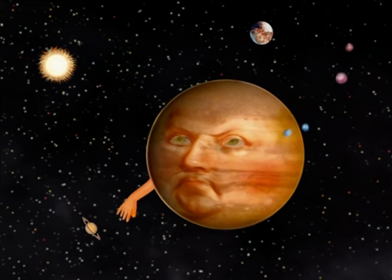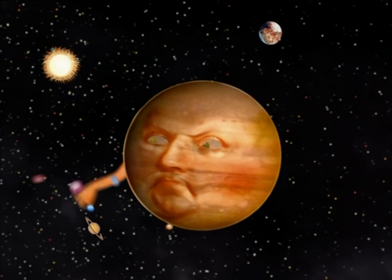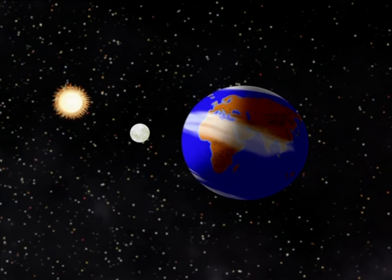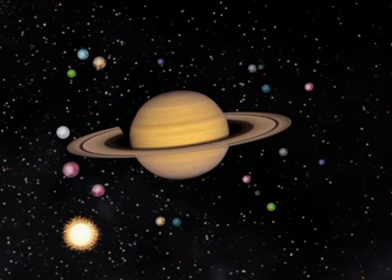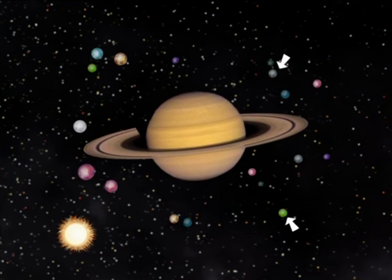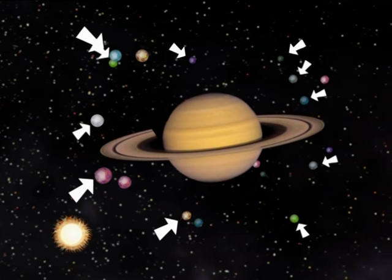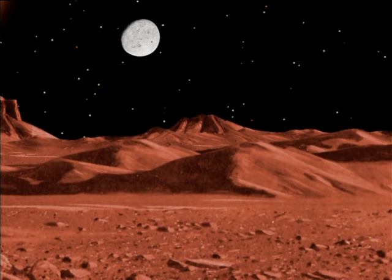Some planets have other smaller bodies orbiting them, called satellites. The Earth only has one satellite, the Moon. Mercury and Venus don't have any, and Saturn has as many as 18. Can you imagine what the night sky would look like on Saturn?